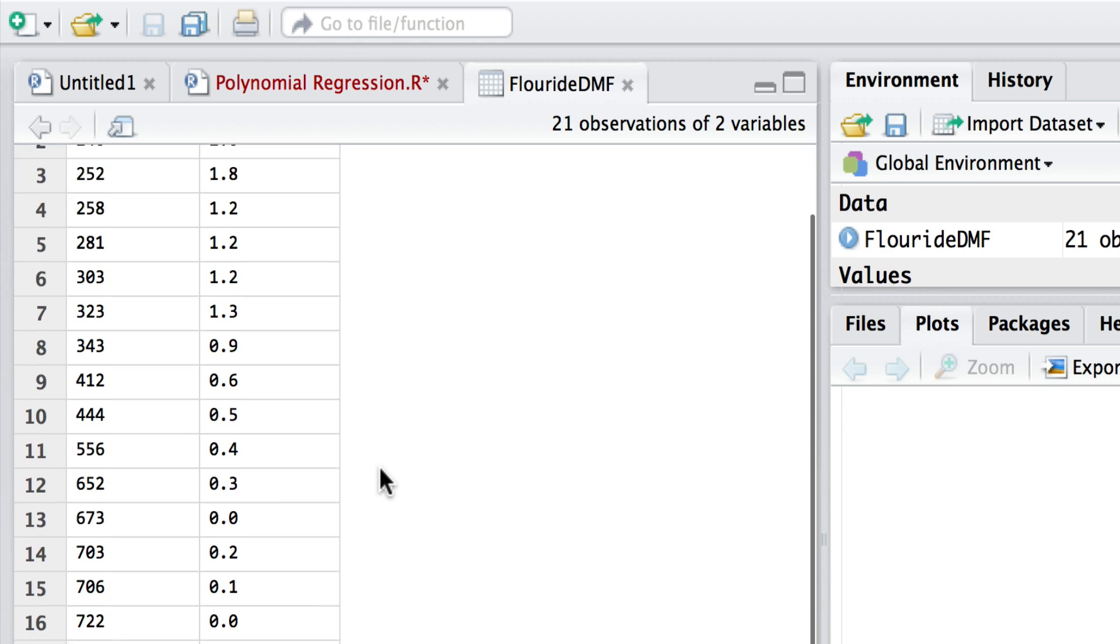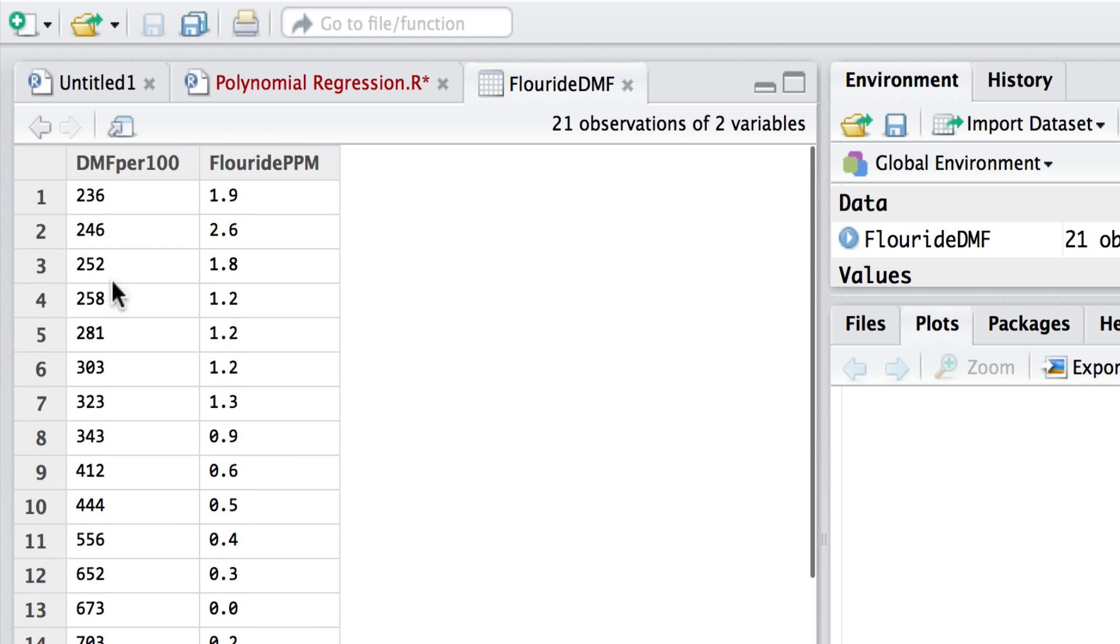They looked at 21 populations of children and they had an index—the decayed, missing, or filled teeth per 100 children—against the fluoride concentration in water in parts per million.